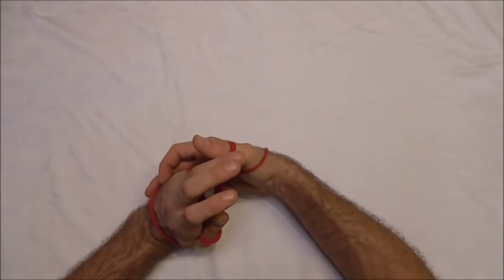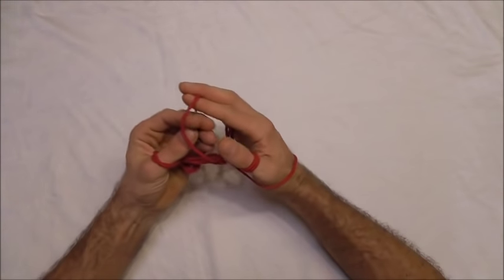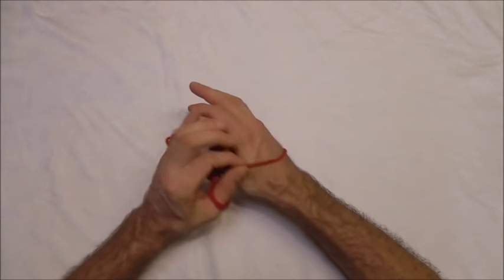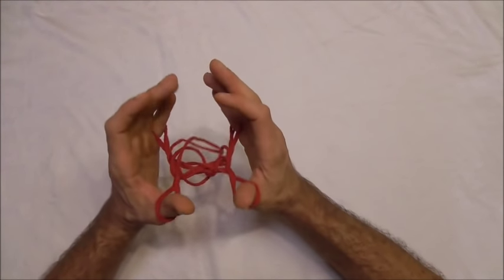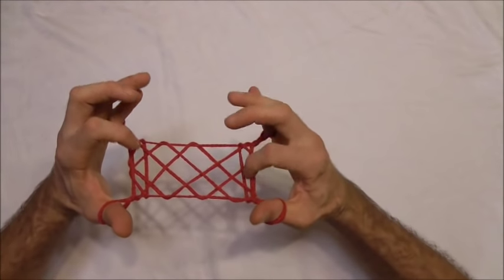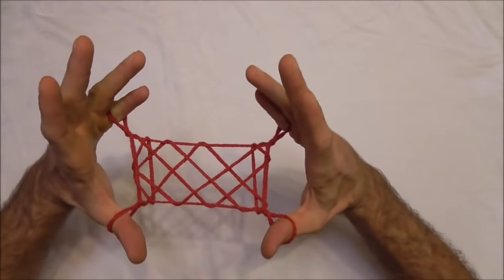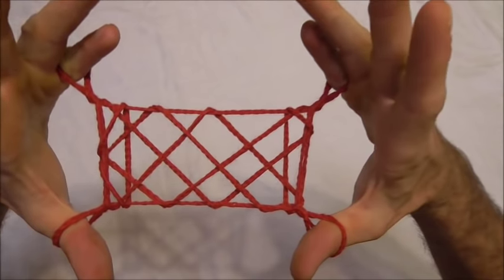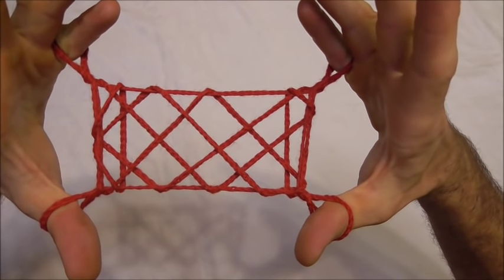Take the strings that are on the back of your wrists and put them over to the palm side. With both hands, wobble the figure around and adjust it a little bit. You should get the finished rug string figure.